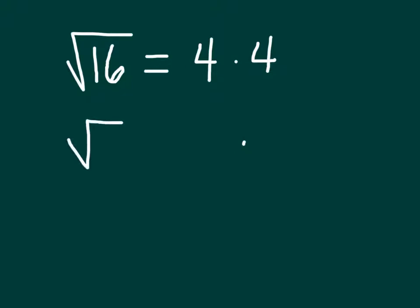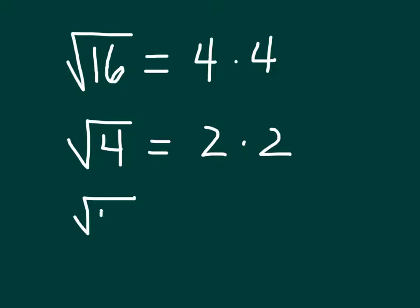If you have the square root of 4, what number can you multiply by itself and get 4? That would be 2 — 2 times 2. And finally, the square root of 121. What number can you multiply by itself and get 121? That would be 11.